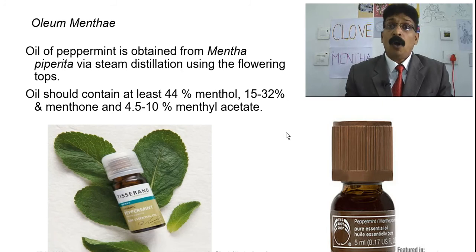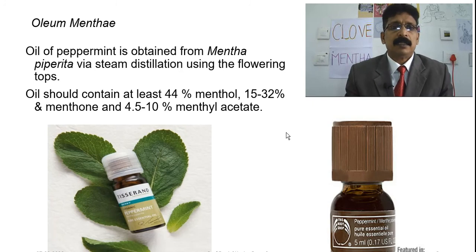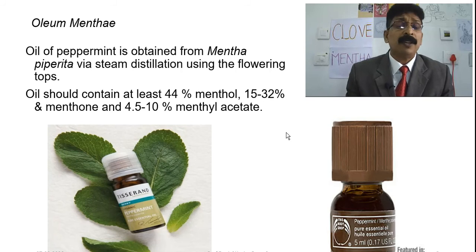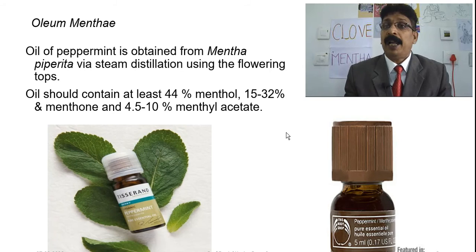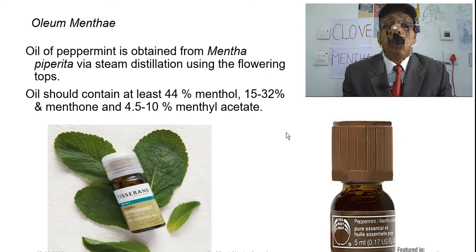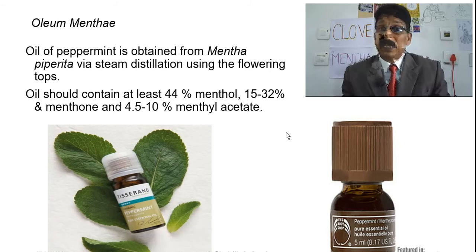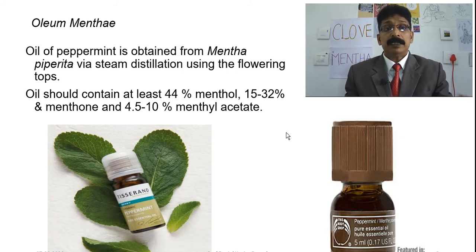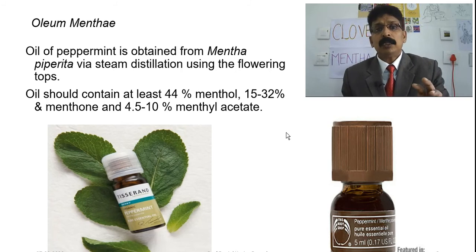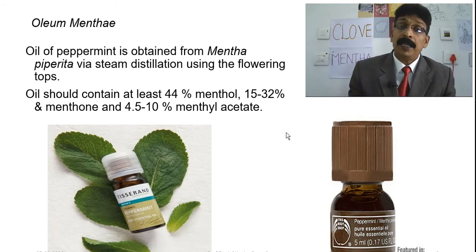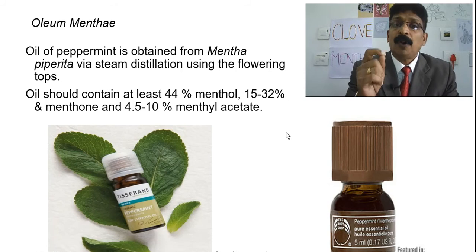Oleum menthae — oil of peppermint — is obtained from Mentha piperita via steam distillation using the flowering tops, not just flower tops. The oil should contain at least 44 percent of menthol, 15 to 32 percent menthone, menthol 4.5 to 10 percent, and menthyl acetate up to a maximum of 10 percent. Menthol, menthone, and menthyl acetate are the main components present in peppermint oil.